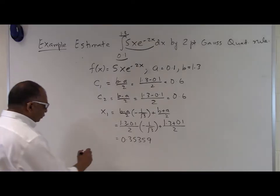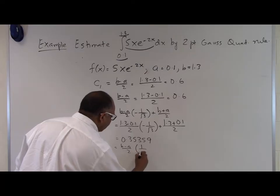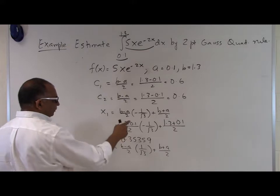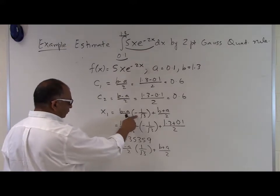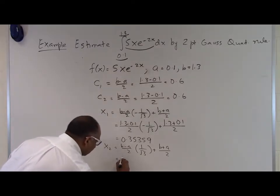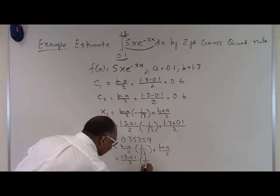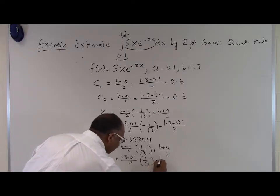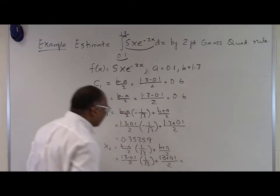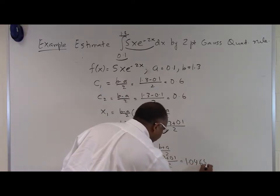For x2, we do the same thing. x2 is (b minus a)/2 times (1 divided by square root of three) plus (b plus a)/2. The only difference is minus 1 over root three for x1, and plus 1 over root three for x2. So: (1.3 minus 0.1)/2 times (1 divided by square root of three) plus (1.3 plus 0.1)/2, which gives 1.0464.